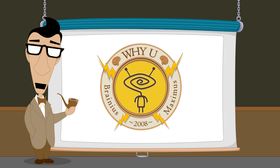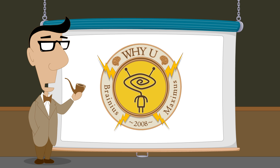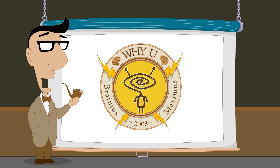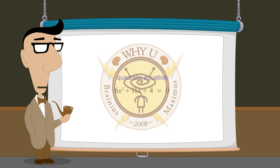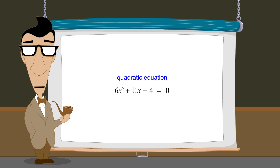Hello, I'm Professor Von Schmohawk and welcome to Why U. In the last several lectures, we have seen that factoring a quadratic expression into a pair of linear expressions is one of the primary methods used to solve quadratic equations. The trick is to find a pair of linear expressions that when multiplied together produce the quadratic expression.